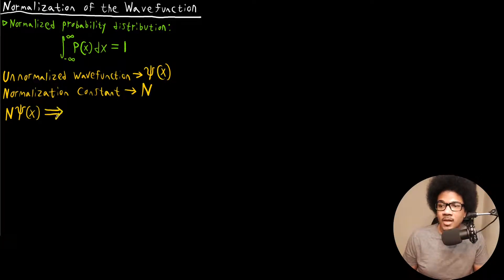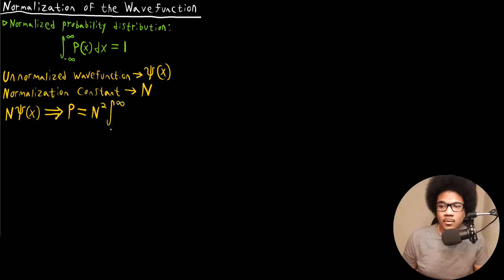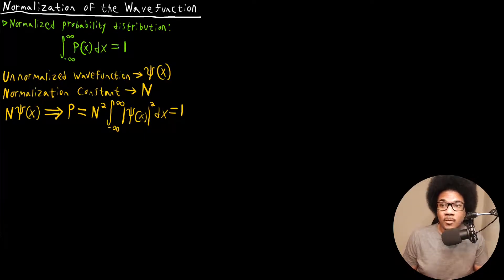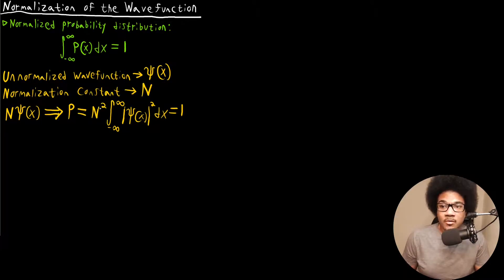Basically what I'm saying is that we take this normalization factor times the wave function, and when we solve that integral, we should get one. So the probability would be equal to the normalization constant squared times the integral from negative infinity to positive infinity of the square of the wave function — Psi of X squared DX. With the normalization factor, this should be equal to one. So the normalization factor is introduced so that the total integral over all space will be equal to one.